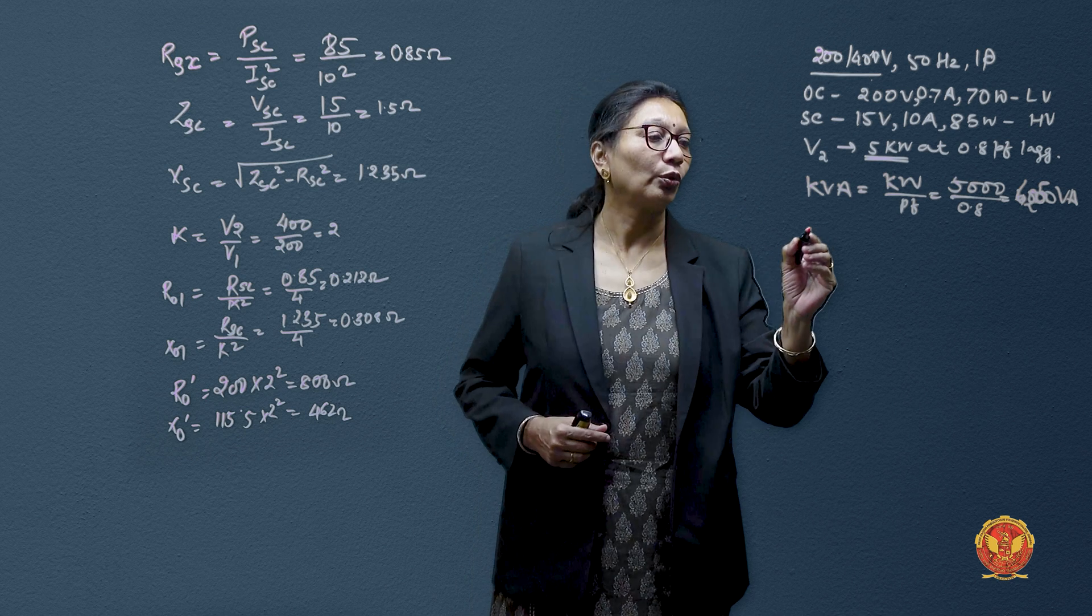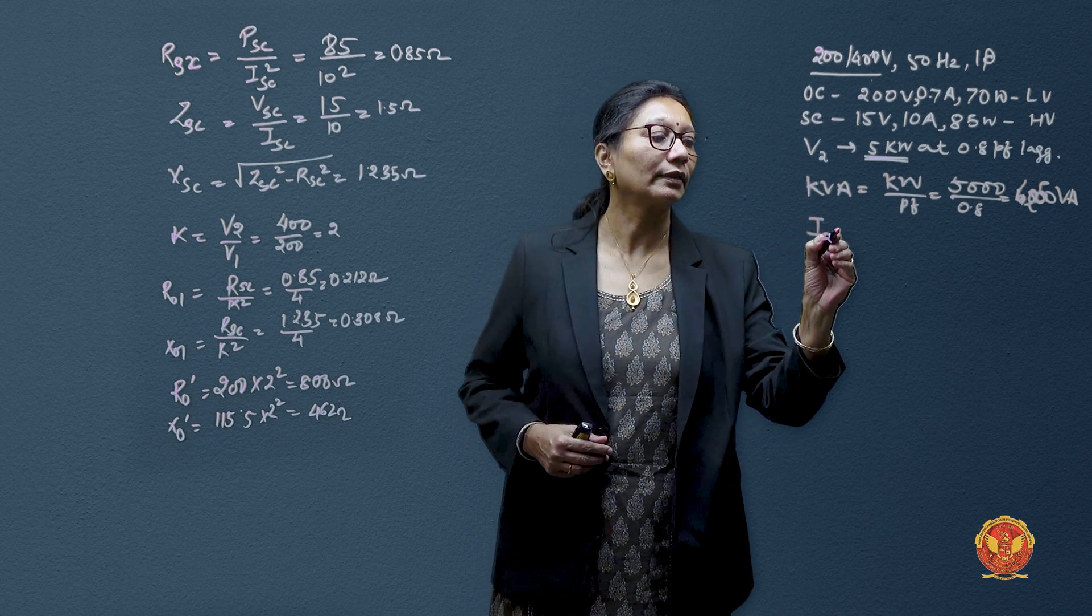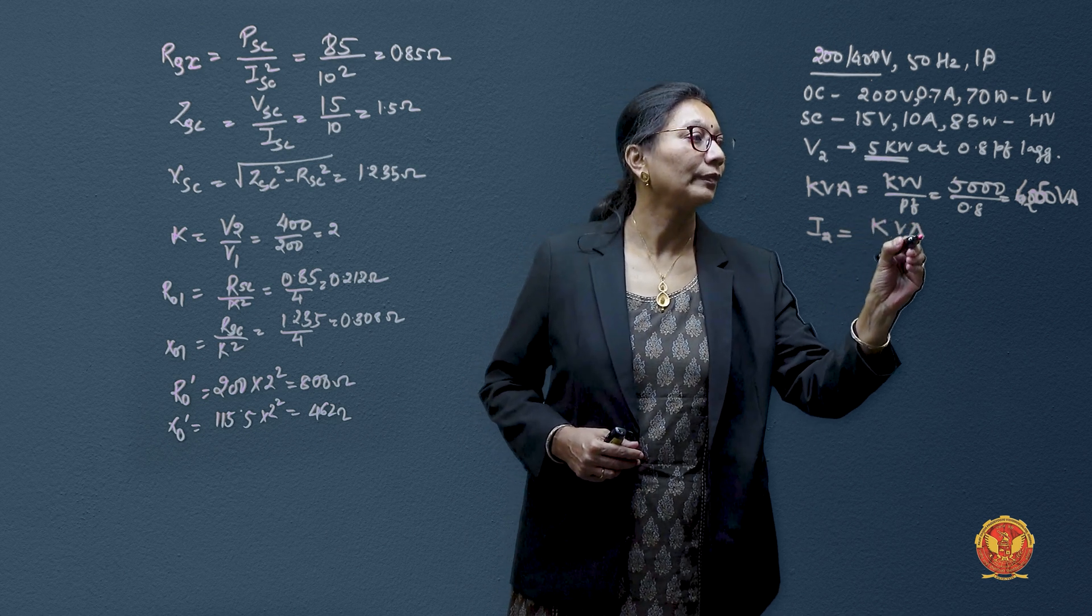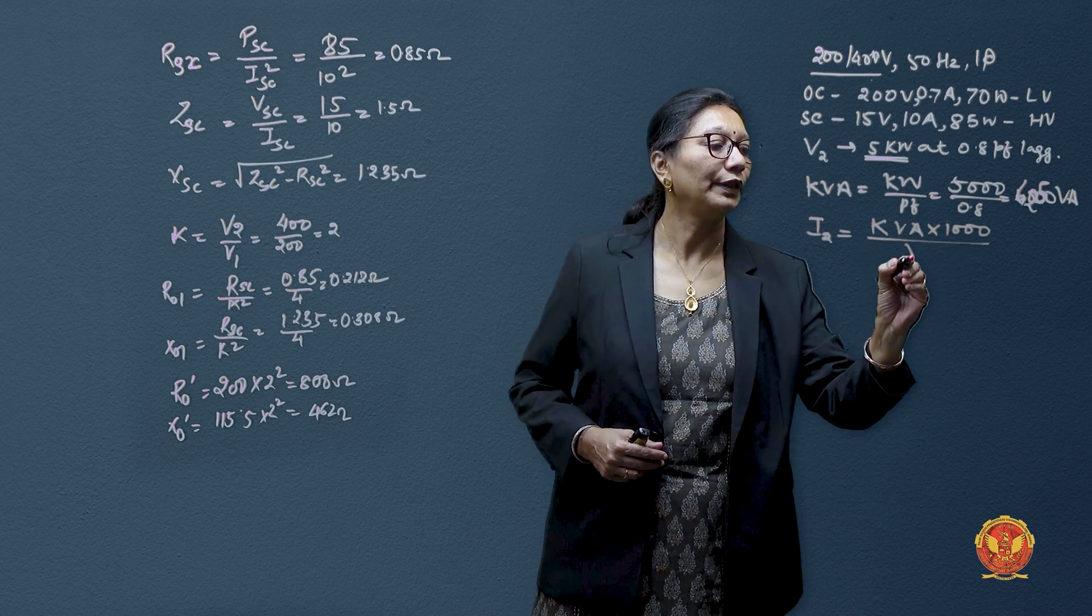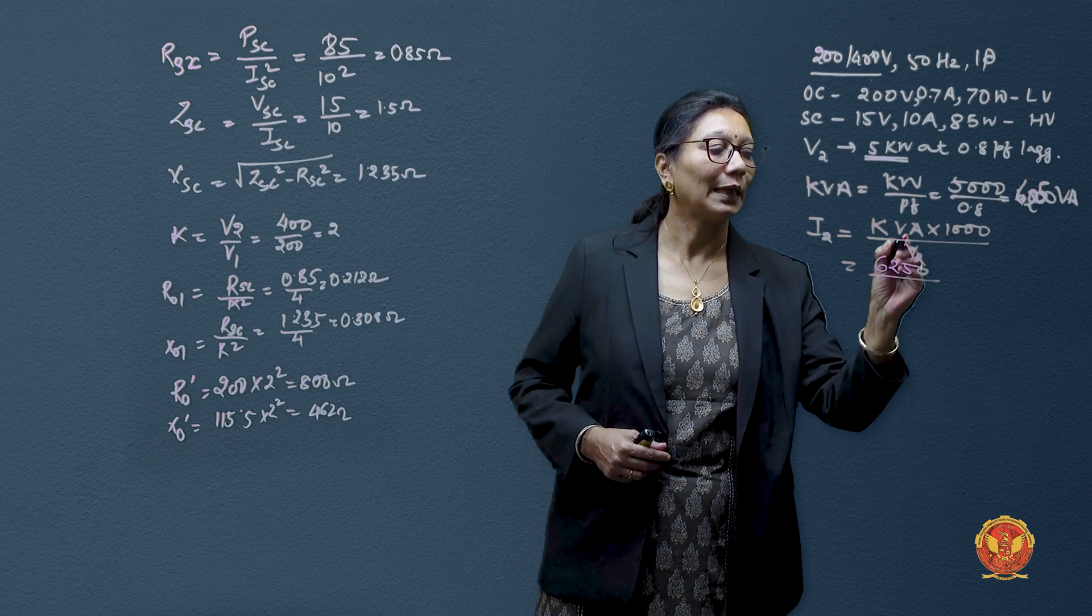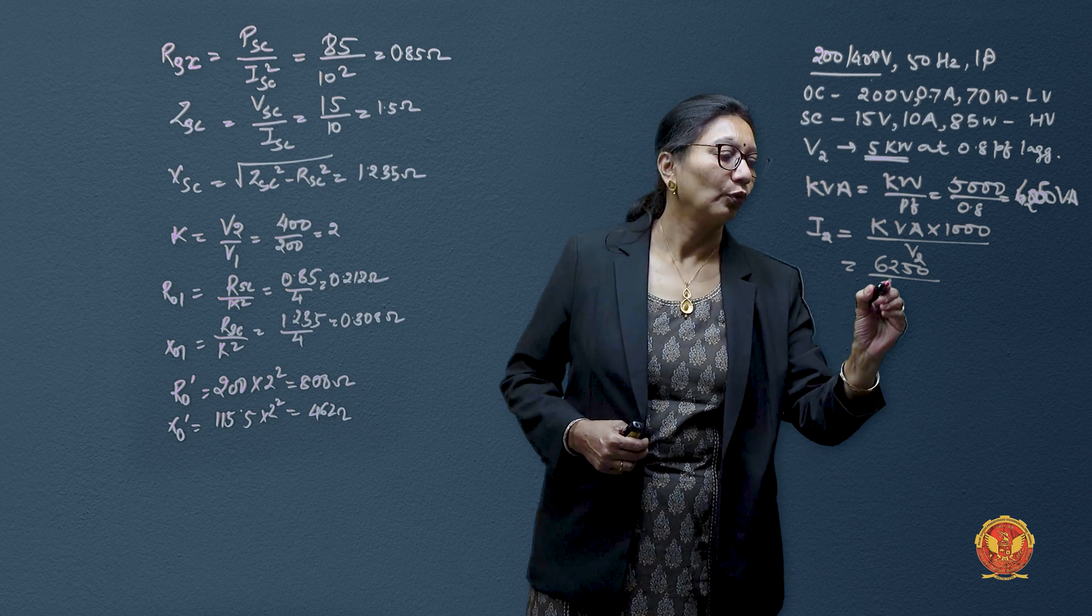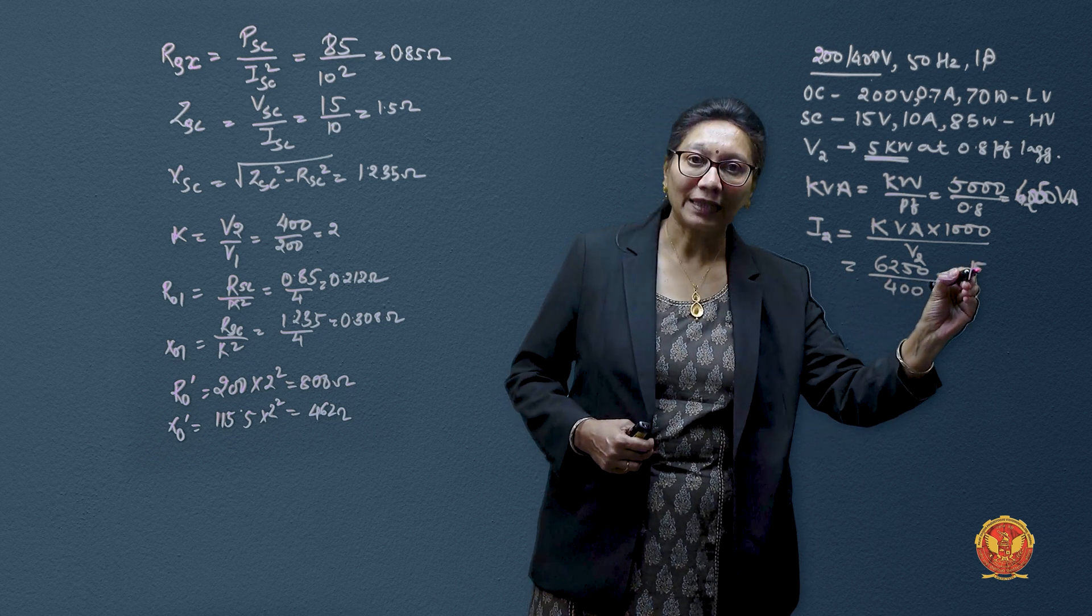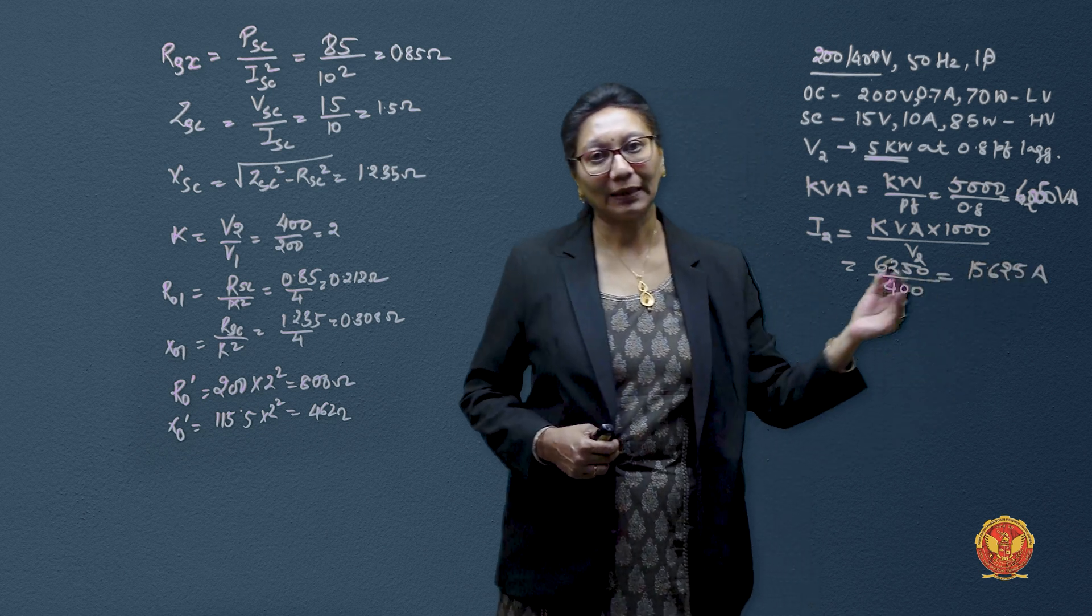So 6250 volt amperes. Voltage we know is on load side. So we can easily calculate load current I2 by taking this VA divided by V2. So here VA is 6250 divided by 400. And this gives us 15.625 amperes. Current I2 is obtained.